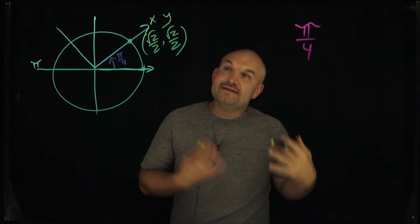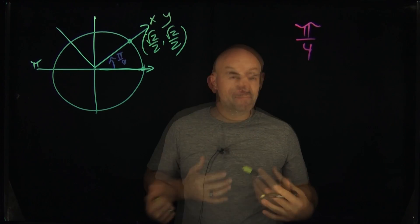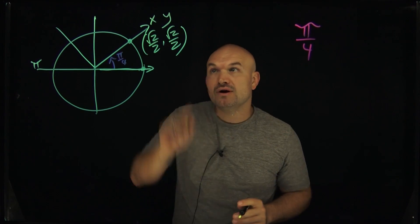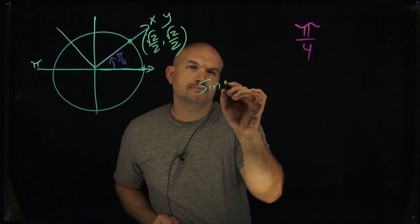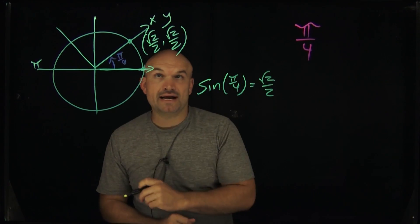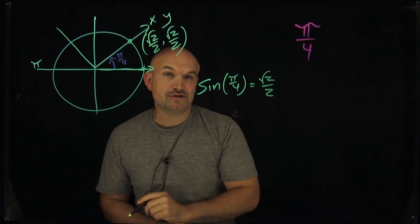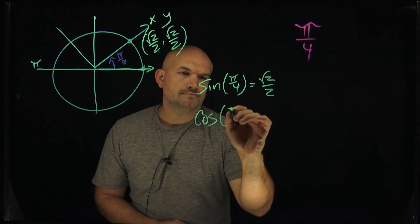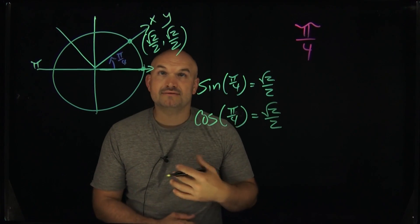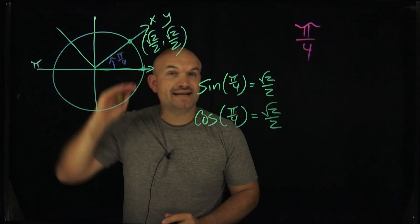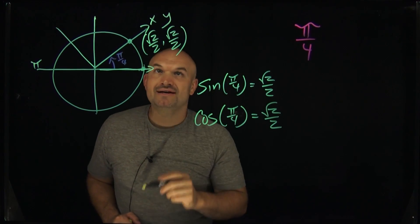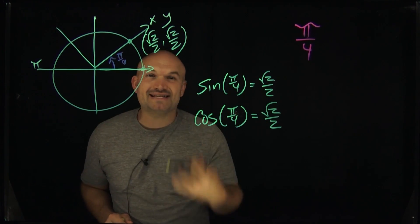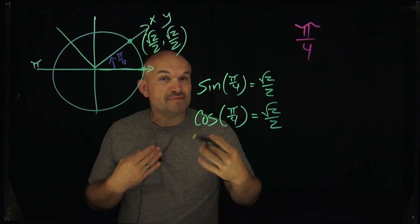Now I can go ahead and evaluate my sine, cosine, and tangent. The sine of an angle represents the y coordinate of that point on the unit circle, so the sine of pi over 4 is square root of 2 over 2. The cosine of your angle represents the x coordinate, so the cosine of pi over 4 is also square root of 2 over 2. The tangent of an angle represents the y coordinate over the x coordinate — so we have square root of 2 over 2 divided by square root of 2 over 2. They're exactly the same, so anything divided by itself is 1.